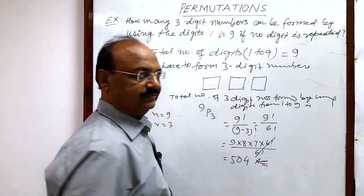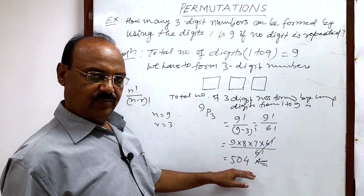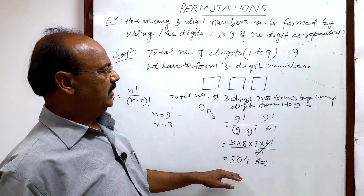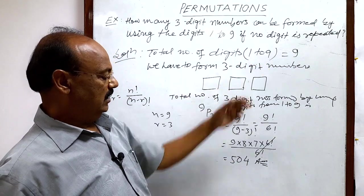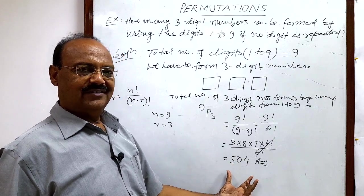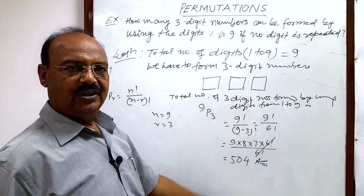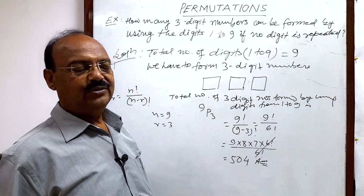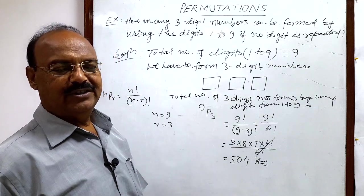This is the answer. The total number of 3-digit numbers which can be formed by using the digits from 1 to 9 is 504. This is a very simple question. Hope you have understood well. Thank you for watching this video and all the best.